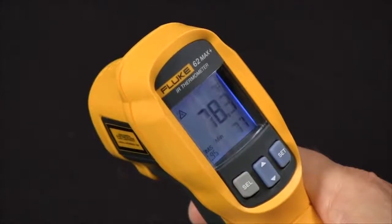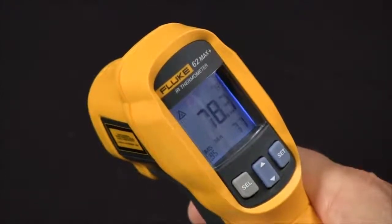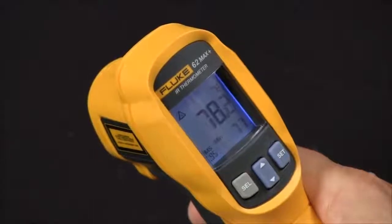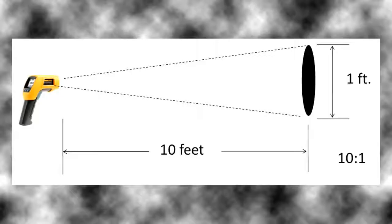So how does that ratio affect its ability to make a measurement of a temperature of a surface from a distance? Distance to spot ratio is used to express the ability of an infrared thermometer to measure temperature of a surface from a distance.